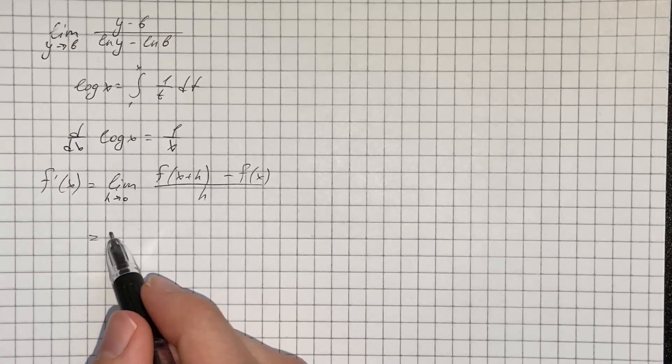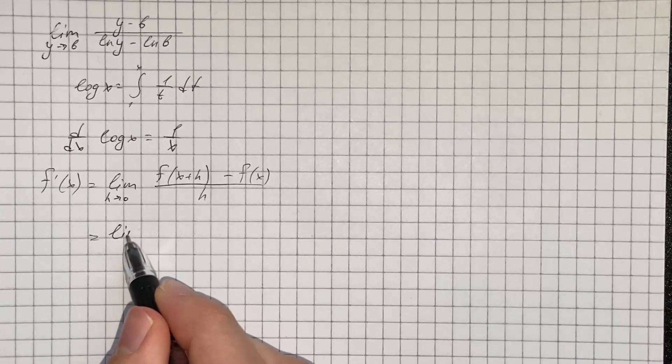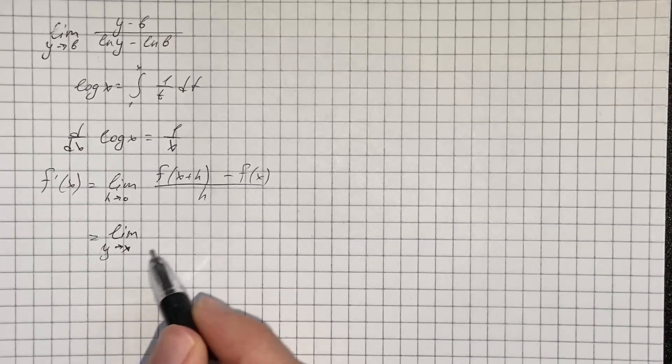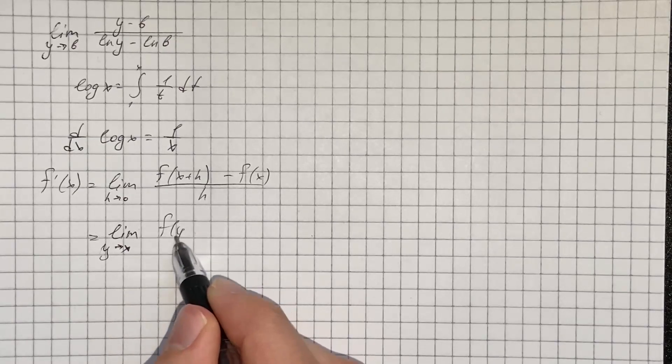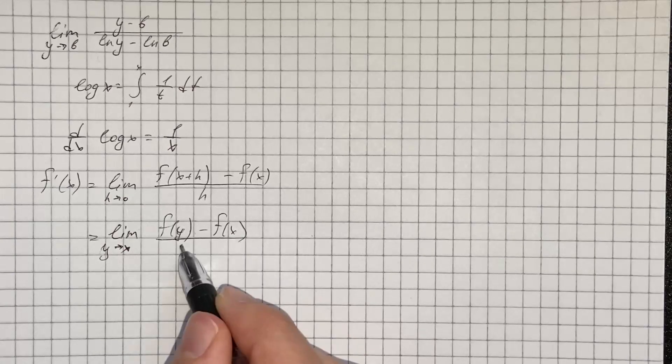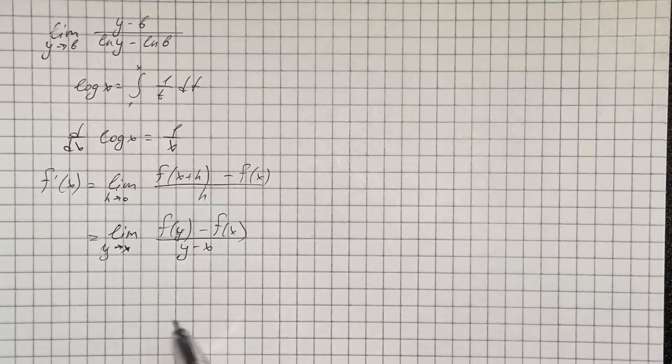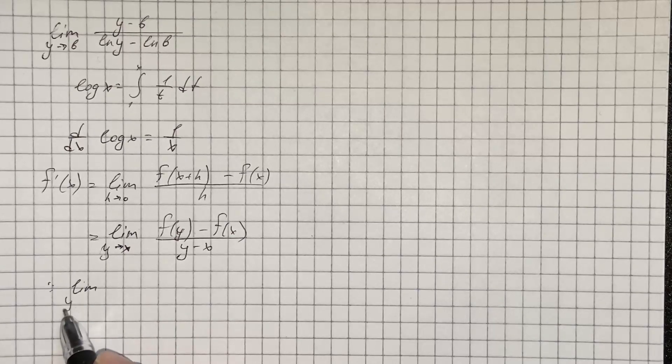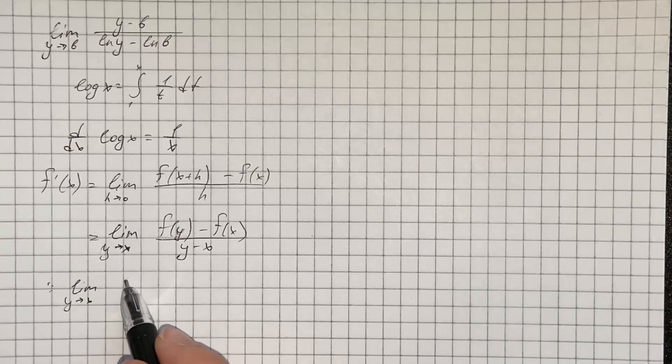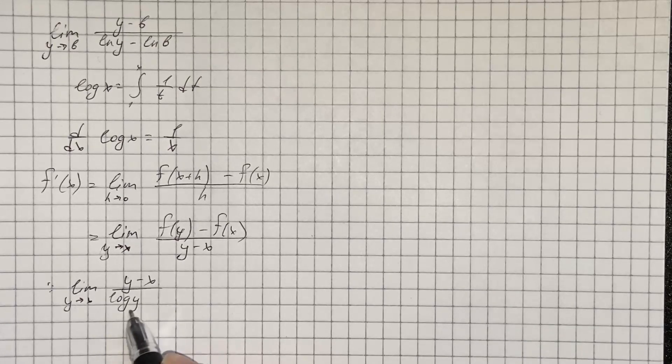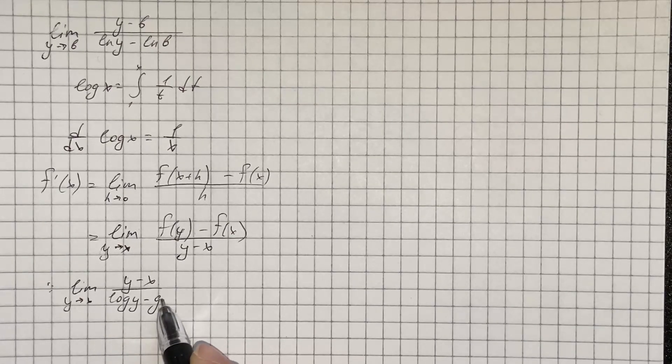So we're going to make a substitution and we write our limit as limit as y approaches x of f of y minus f of x over y minus x. Hence, our limit as y approaches x of y minus x over log of y minus log of x.